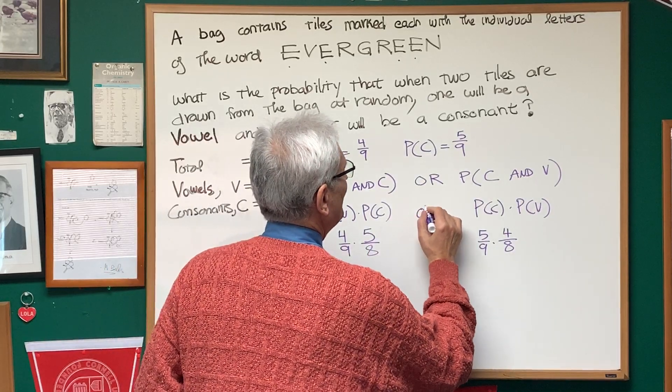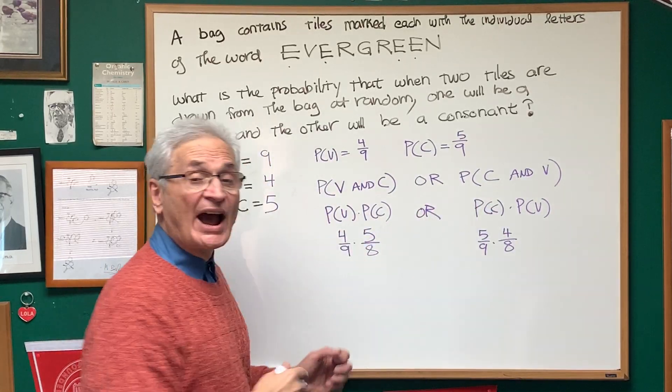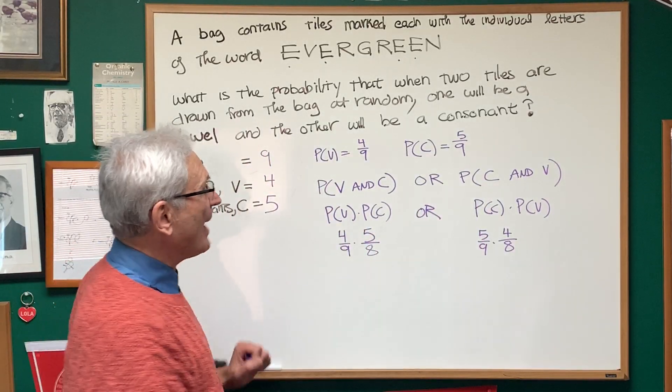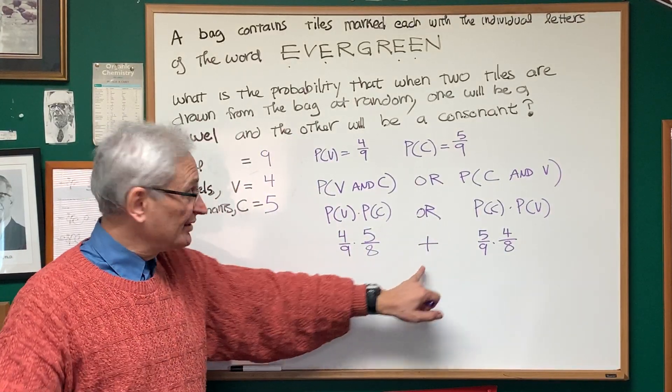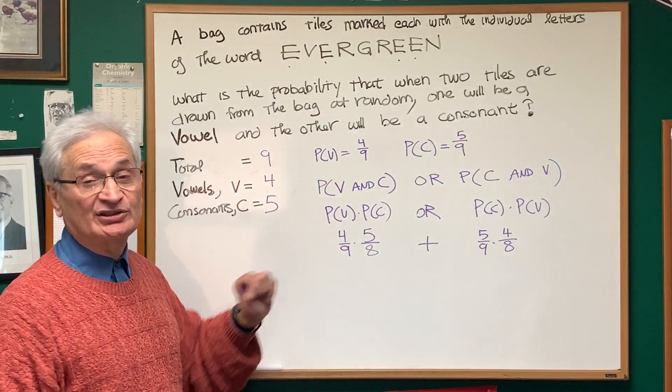Now, when I'm looking at the probability of one or another outcome in a sample space, I'm going to add the probabilities. So or turns to plus in probability problems and turns to multiplication.